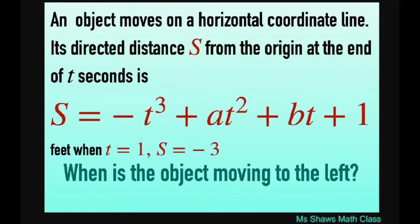Hi everyone. An object moves on a horizontal coordinate line. Its directed distance S from the origin at the end of t seconds is given. When t equals 1, S equals negative 3. We're determining when is the object moving to the left.